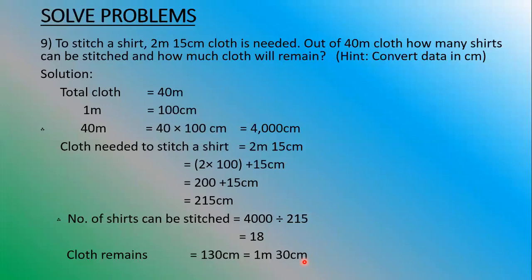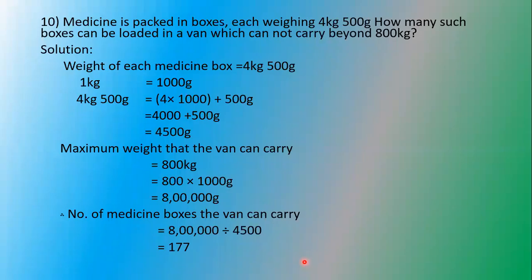We move to the next question. Medicine is packed in boxes, each weighing 4 kilograms 500 grams. How many such boxes can be loaded in a van which cannot carry beyond 800 kilograms? Beyond means more than that — the van cannot carry more than 800 kilograms of weight. So the maximum weight capacity of the van is 800 kilograms.